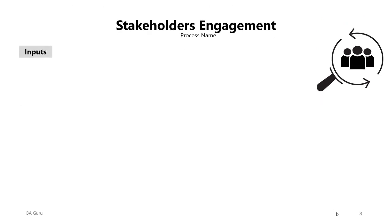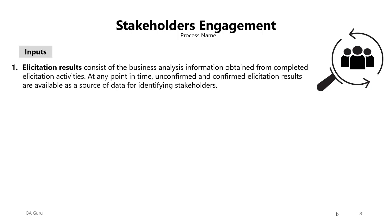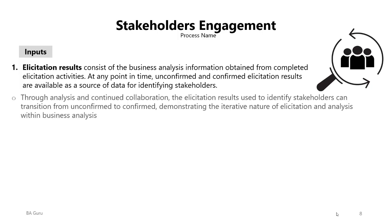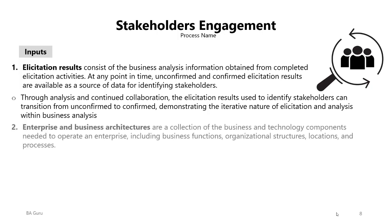The first input is elicitation results, which consist of business analysis information obtained from completed elicitation activities. At any point in time, unconfirmed and confirmed elicitation results are available as a source of data for identifying product stakeholders. Through analysis and continued collaboration, elicitation results used to identify stakeholders can transition from unconfirmed to confirmed, demonstrating the iterative nature of elicitation and analysis within business analysis.